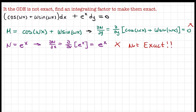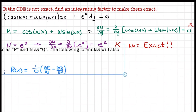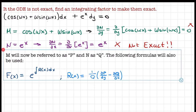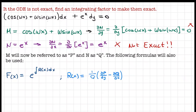Since they are not exact, this is where we find our integrating factor. We relabel things: M will now be referred to as P and N will now be referred to as Q. We'll use the formula f of x equals e to the integral of r of x dx, where r of x is given by a specific formula.